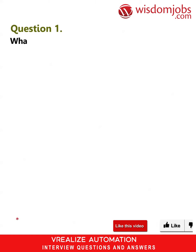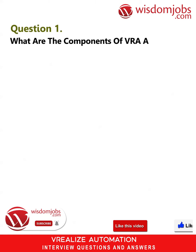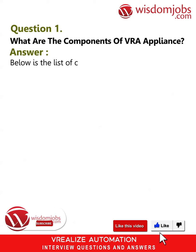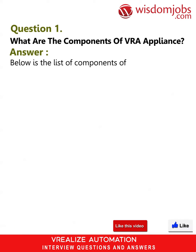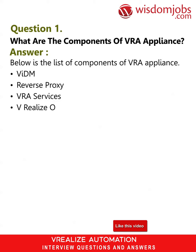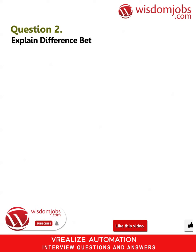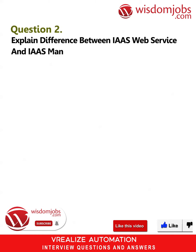Question 1: What are the components of VRA appliance? Answer: Below is the list of components of VRA appliance: the IDM, reverse proxy, VRA services, vRealize Orchestrator, Postgres database.